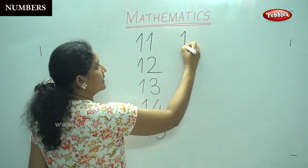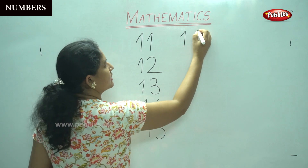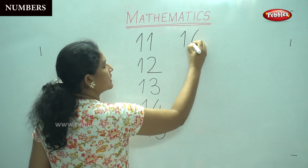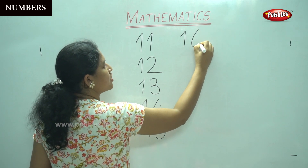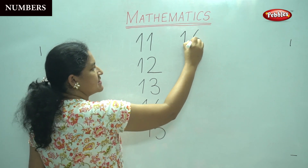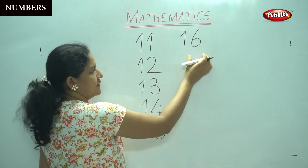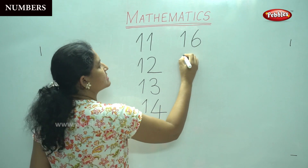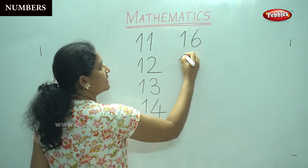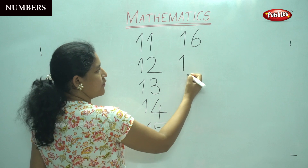Slanting line, straight line, number one, a curve and it joins together. This is number 16.